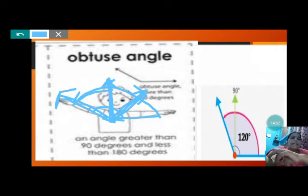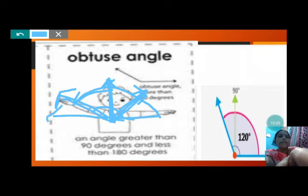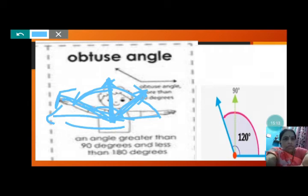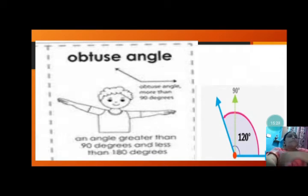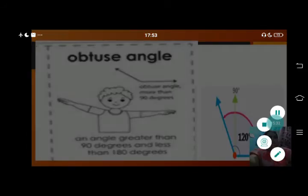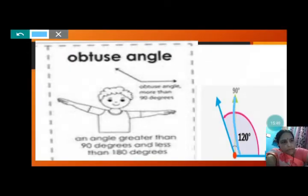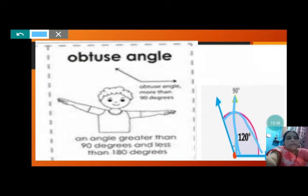An angle greater than 90 degrees and less than 180 degrees — he has not put his hand straight, because if he does, that will become 180 degrees. He has stopped here — that is the obtuse angle. In this picture also, 120 degrees — 120 is greater than 90, so that will make our obtuse angle. More than 90 degrees from here to here — 120 degrees — that makes the obtuse angle.